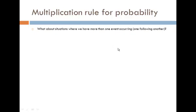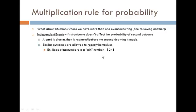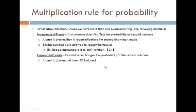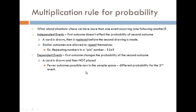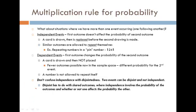In situations where we have more than one event occurring, the multiplication rule is that if you have independent events, then we multiply the probabilities. These are reminders from before. For dependent events, we don't want to confuse independence with disjointness.